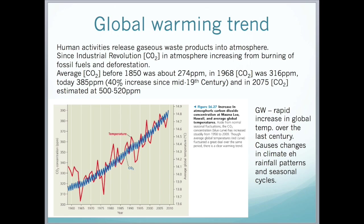Global warming is the term that we use for the rapid increase in global temperature over the last century. It's a type of climate change, so a significant change in the weather of a region over a period of at least several decades. Global warming also causes other types of climate change, such as changing rainfall patterns and seasonal cycles.